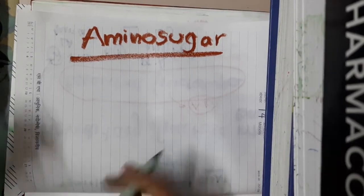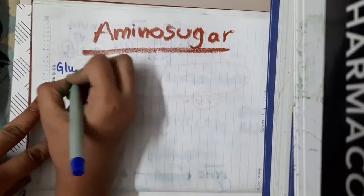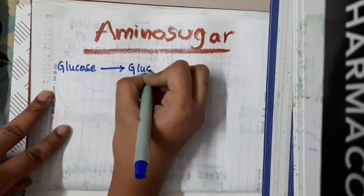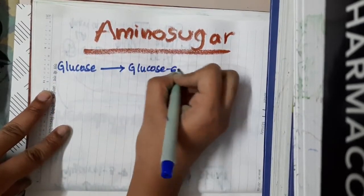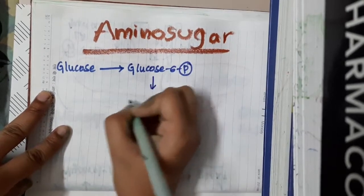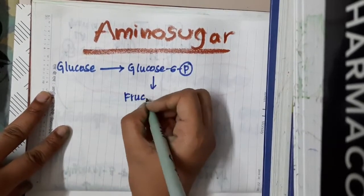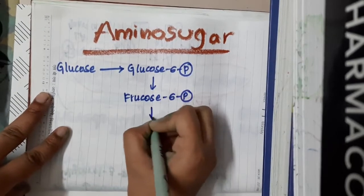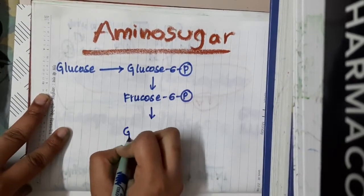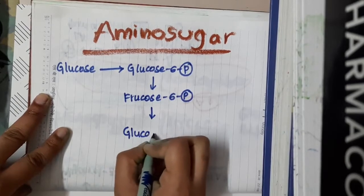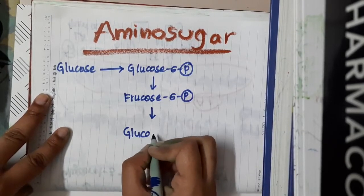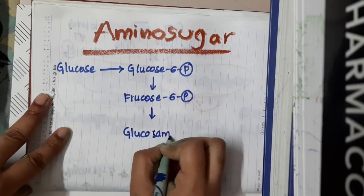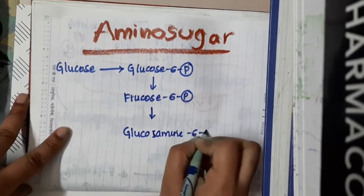We have glucose. Glucose gives rise to glucose-6-phosphate in the presence of hexokinase. This glucose-6-phosphate, in the presence of phosphohexose isomerase, forms fructose-6-phosphate. This fructose-6-phosphate combines with glutamine in the presence of aminotransferase and it forms glucosamine-6-phosphate.